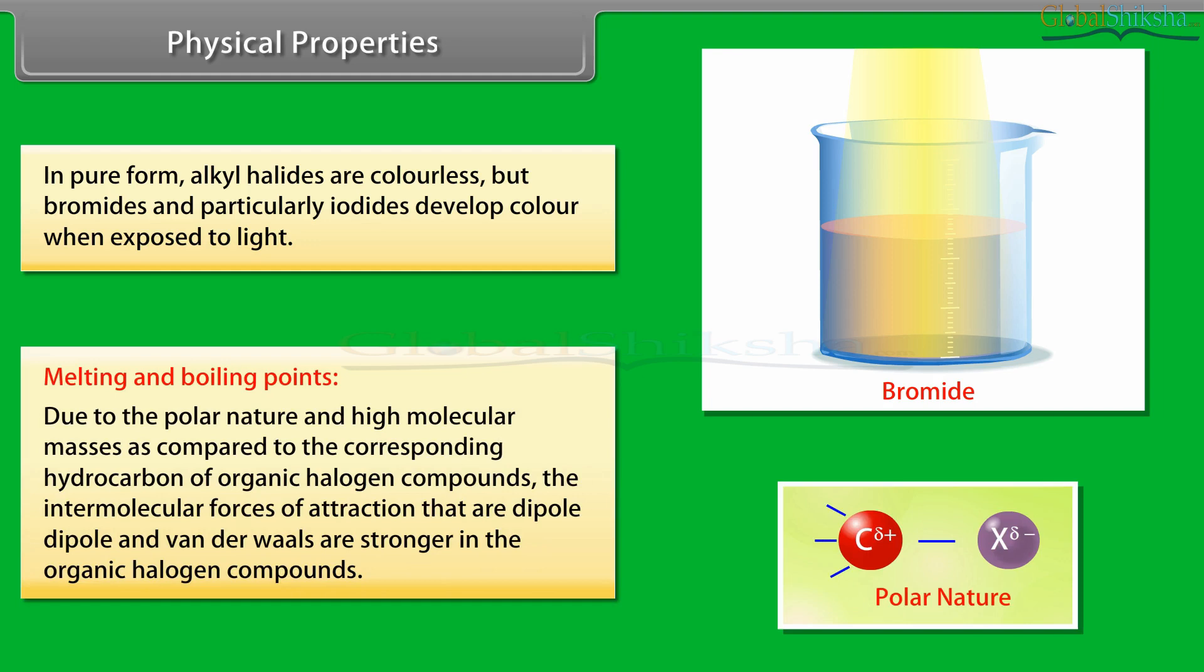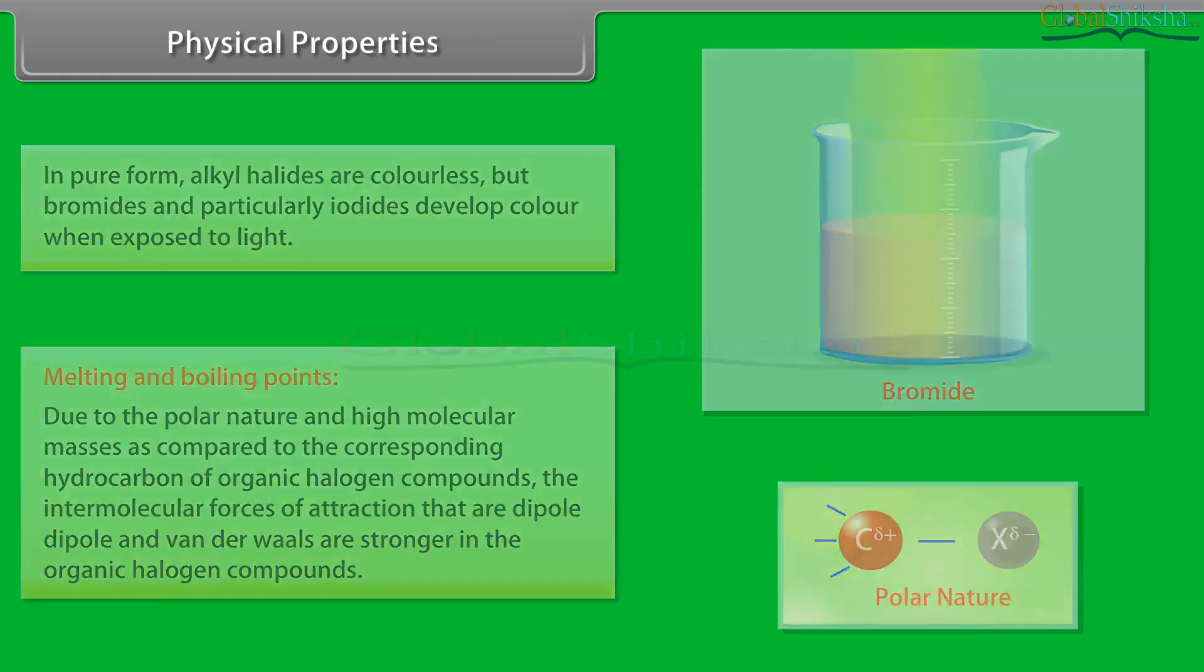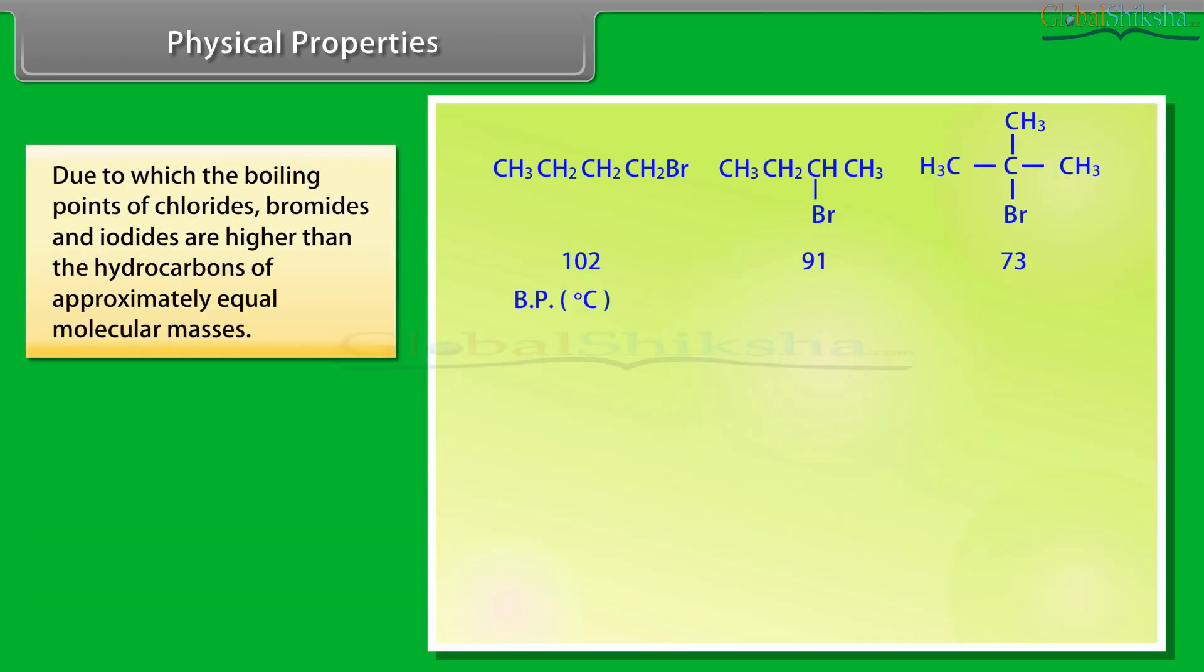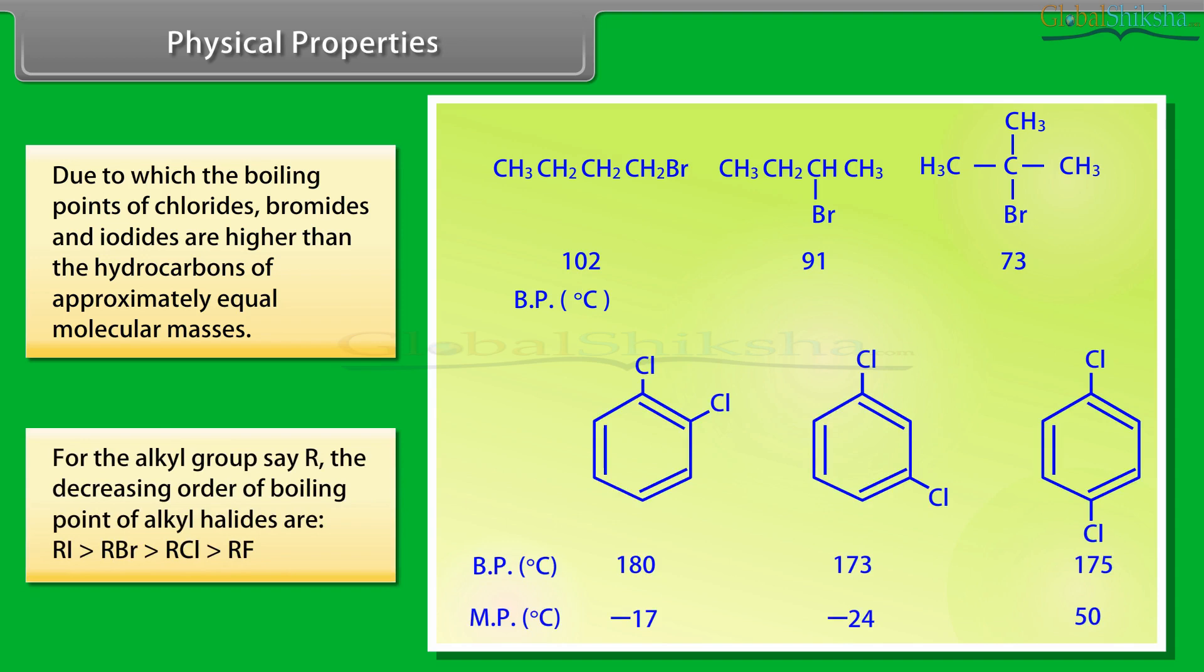Melting and Boiling Points: Due to the polar nature and high molecular masses, as compared to the corresponding hydrocarbon of organic halogen compounds, the intermolecular forces of attraction that are dipole-dipole and van der Waals are stronger in the organic halogen compounds, due to which the boiling point of chlorides, bromides and iodides are higher than the hydrocarbons of approximately equal molecular mass.